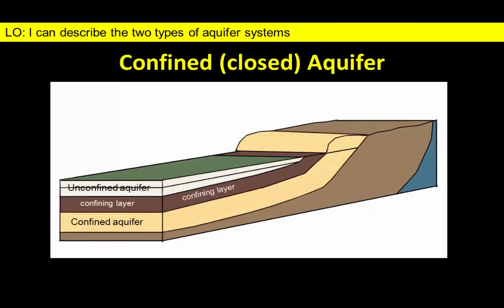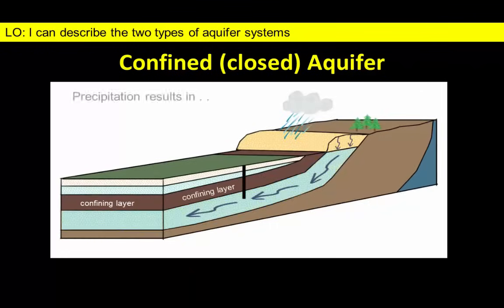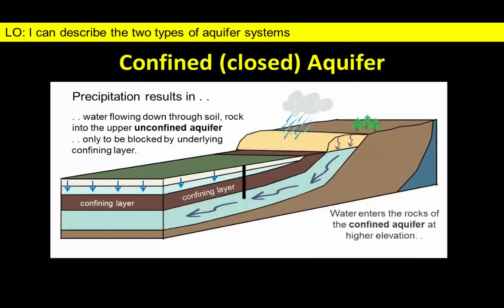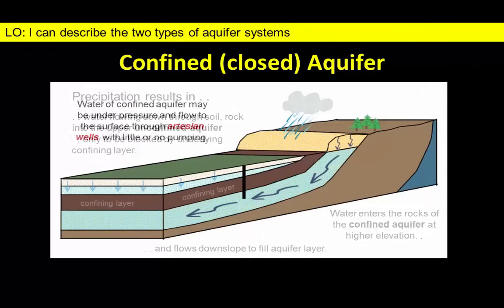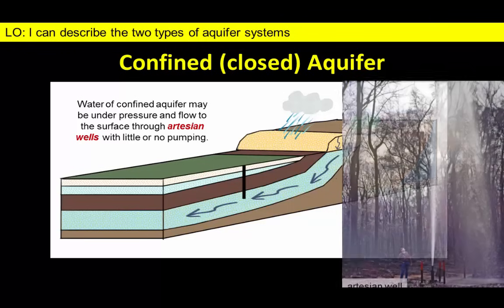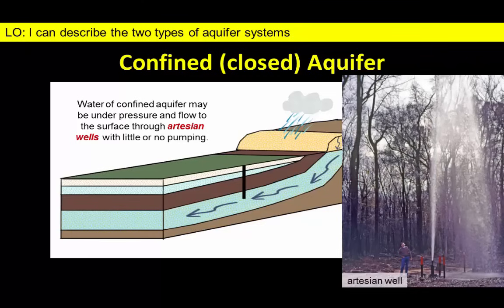Water doesn't enter confined aquifers as easily as it does an unconfined aquifer. Water can trickle down into the unconfined aquifer, but the underlying confining layer prevents groundwater from continuing its journey directly into the confined aquifer from above. Instead, confined aquifers are supplied by stream flow or precipitation in places where the aquifer materials crop out at the surface. Groundwater in the confined aquifer is under pressure from water upslope in the same layer. This can produce what are known as artesian wells that shoot the pressurized water upward — no pumping required.